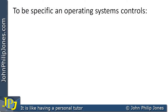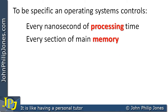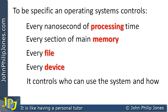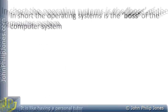To be specific, an operating system controls every nanosecond of processing time, every section of main memory, every file, and every device. In addition, it controls who can use the system and how. In short, the operating system is the boss of the computer system.